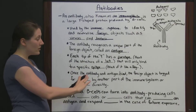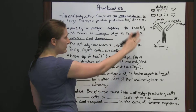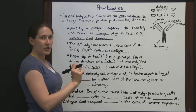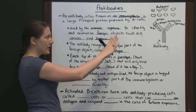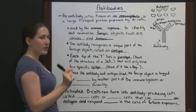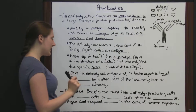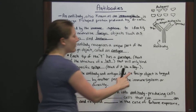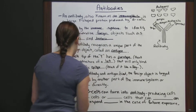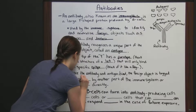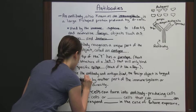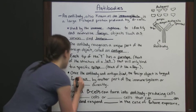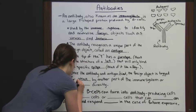Once the antigen and antibody bind — and remember the special epitope-paratope relationship, lock and key — it's only going to be able to bind to one specific type of antigen. Once they bind, the foreign object is tagged for attack by another part of the immune system, or it's neutralized directly.